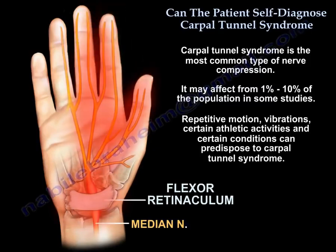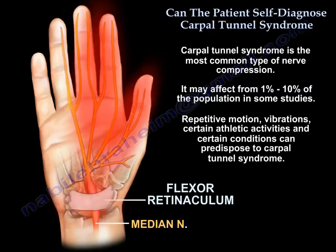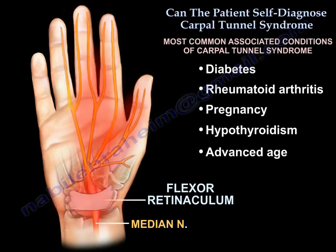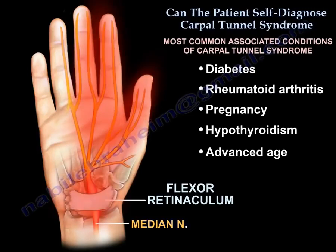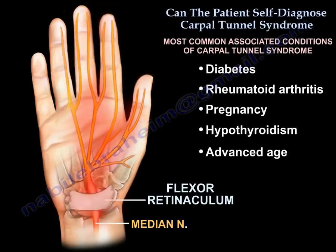Repetitive motion, vibrations, certain athletic activities, and certain conditions can predispose to Carpal Tunnel Syndrome. The most common associated conditions are diabetes, rheumatoid arthritis, pregnancy, hypothyroidism, and advanced age.